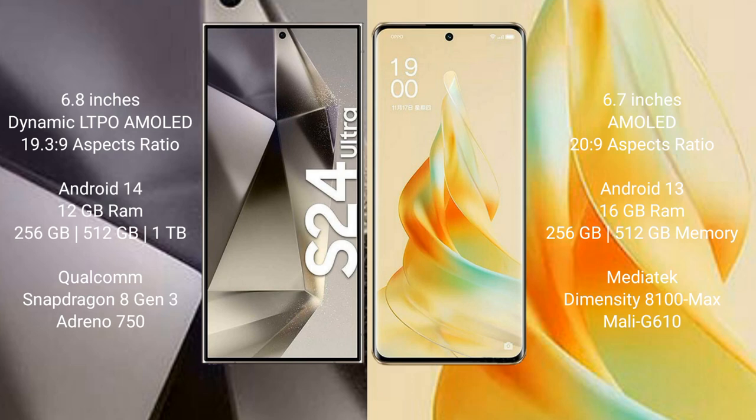Samsung Galaxy S24 Ultra comes with 12GB RAM, 256GB storage, and also 12GB RAM with 1TB internal storage, powered by a Qualcomm Snapdragon 8 Gen 3 processor. OPPO Reno 9 Pro comes with 16GB RAM, 256GB storage, and 12GB RAM with 256GB internal storage, powered by a MediaTek Dimensity 8100 Max processor.